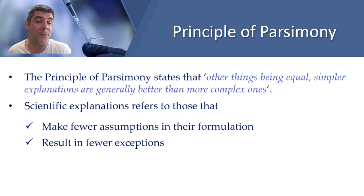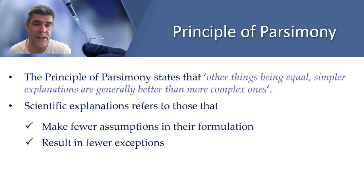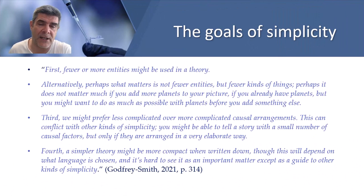Scientific explanations refer to those that make fewer assumptions in their formulation and result in fewer exceptions. The criterion of simplicity is quite difficult to explain, and when scientists are trying to develop explanations of some phenomena, they devise a number of alternative hypotheses. Sometimes, after testing those hypotheses, there may be more than one plausible hypothesis for a particular phenomenon. These are the situations in which Occam's razor or the principle of parsimony might be useful.